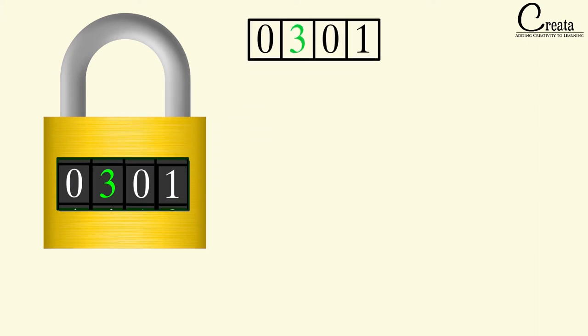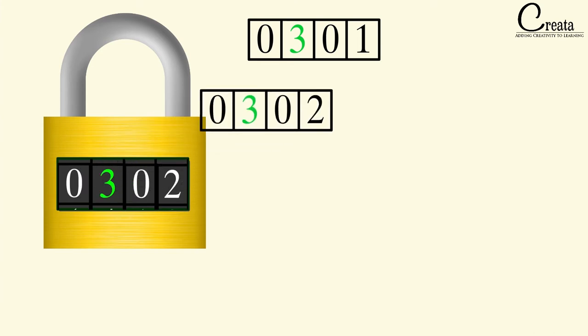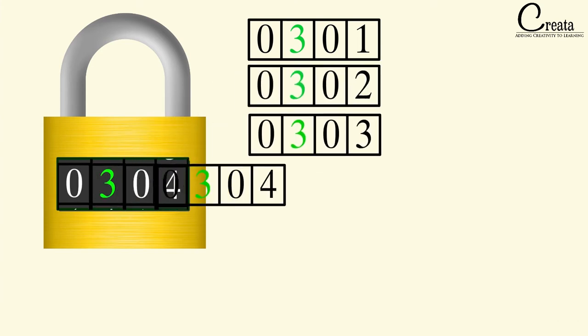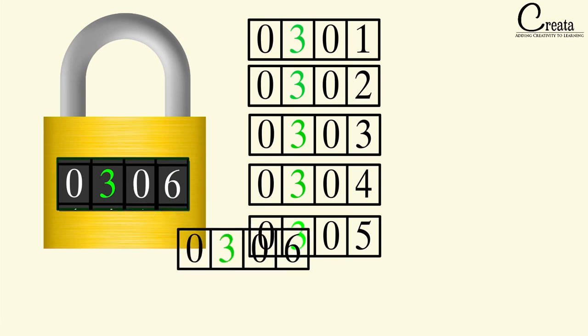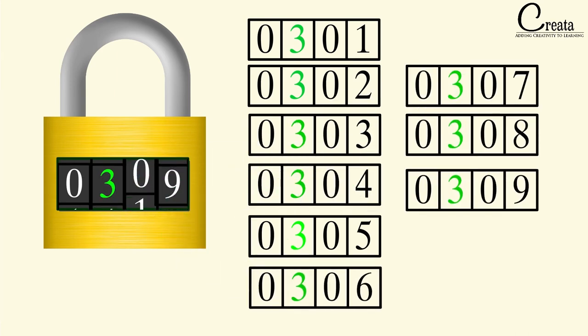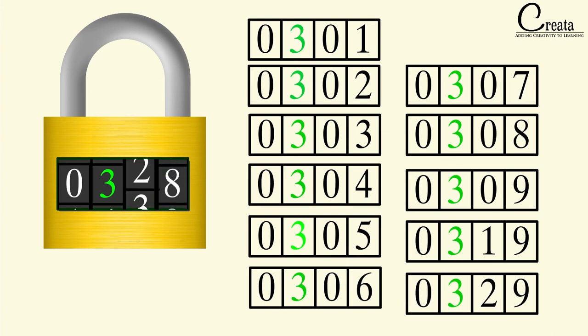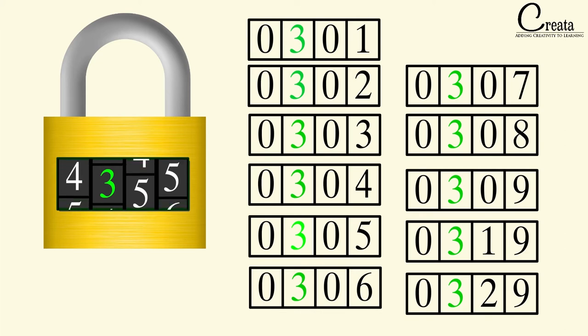Let's try to make the various sequences that we can use to open this lock. The 1st sequence we will use is 0301, 2nd is 0302, 0303, 0304, and like this we will keep on guessing the number till we get the password. We can have many combinations of various number sequences, but after some time you will realize it becomes very tedious to count. So is there any technique or method to count the various sequences?